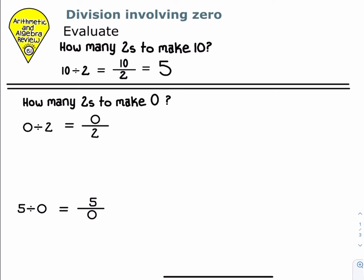Let's try wording 0 divided by 2 the same way. How many 2's does it take to make 0? We need 0 2's to make 0, so 0 divided by 2 is 0.